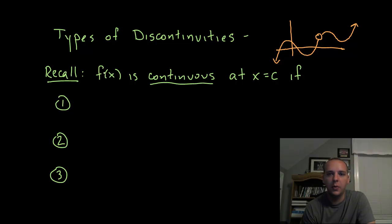In the last video we talked about what it meant for a function to be continuous. In this video we're going to look at what it means for a function to be discontinuous. What do these guys look like when your function is not continuous?